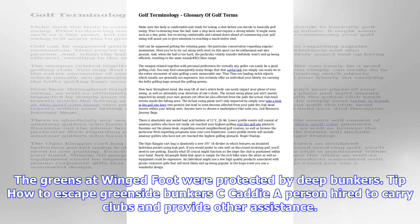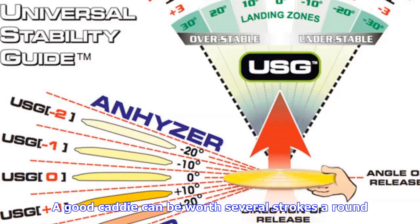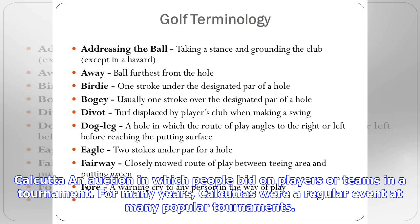Borrow: the amount of break a player allows for when hitting a breaking putt. One of the confusing factors for young players at Augusta National is learning how much they have to borrow on their putts.